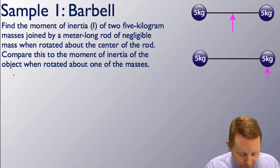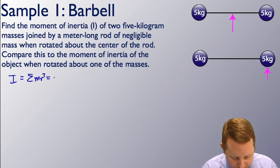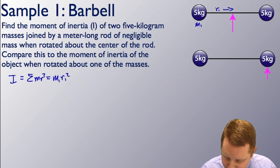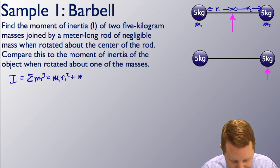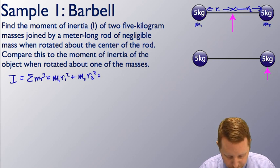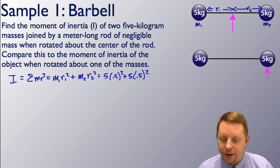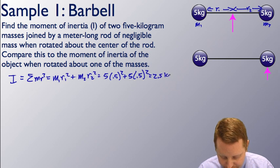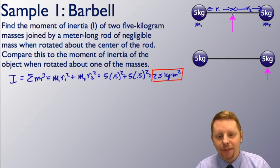Let's start with the top one. The moment of inertia, capital I, is the sum of all mr squareds, which is m1 r1 squared plus m2 r2 squared. Mass one is five kilograms; r1, since the whole rod is one meter, must be 0.5 meters. So: 5 times 0.5 squared, plus 5 kilograms times 0.5 meters squared, which gives 2.5 kilogram meters squared for the moment of inertia when rotated about the center.